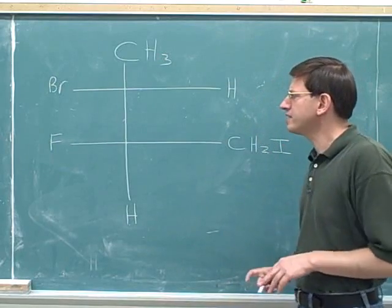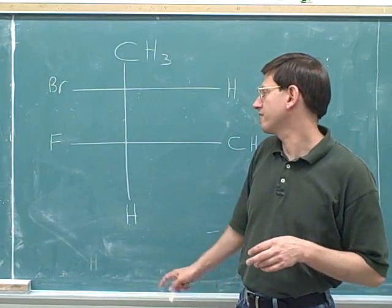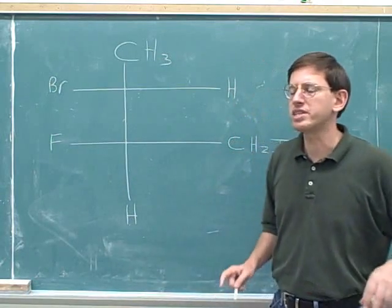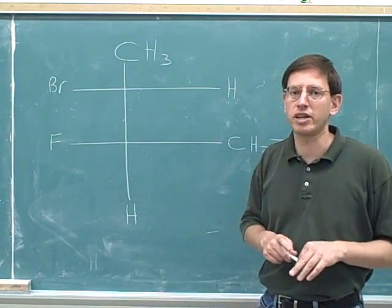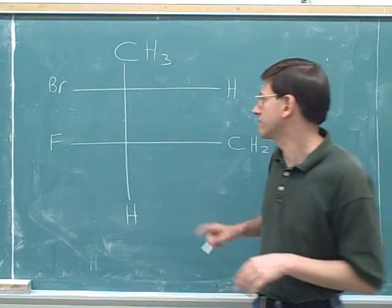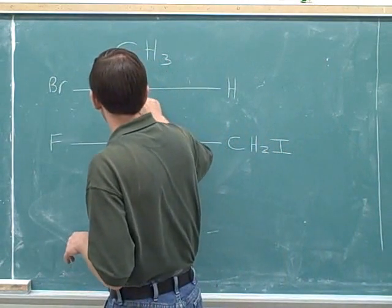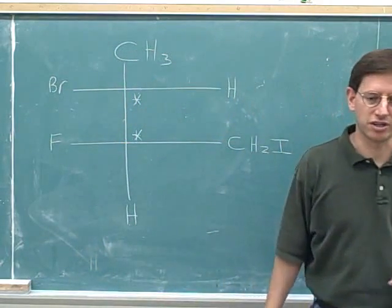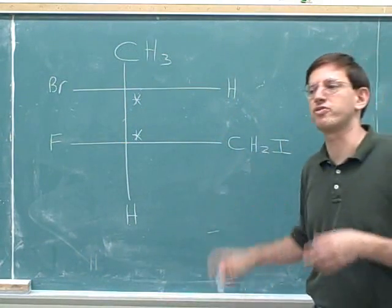Well, now this is a Fisher diagram. We can see it's a Fisher diagram because we have intersecting horizontal and vertical lines with no dashes or wedges. But this introduces a new issue we haven't talked about yet because this has two stereocenters. This intersection is a stereocenter and this intersection is also a stereocenter. So here's a new issue we haven't talked about before.